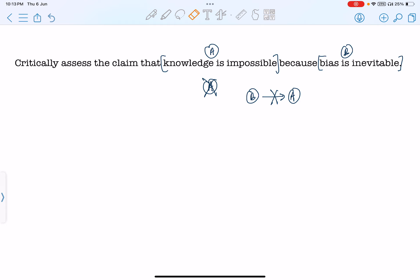That is the first thing that we need to understand. The second thing that we need to understand beyond the causal relation is what are those keywords in the question? The first keyword is knowledge. Second keyword is impossible. Third one is bias. And the fourth is inevitable.